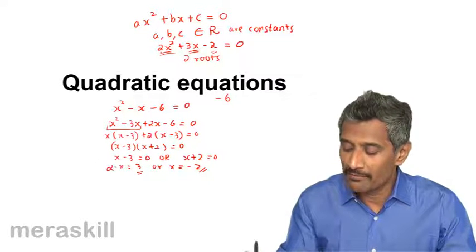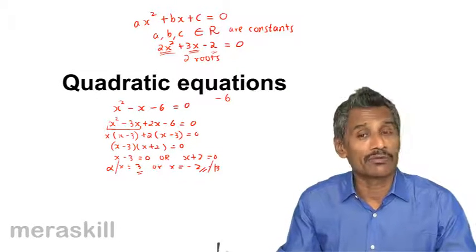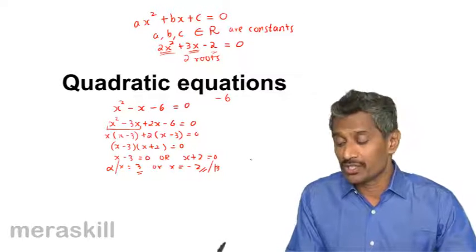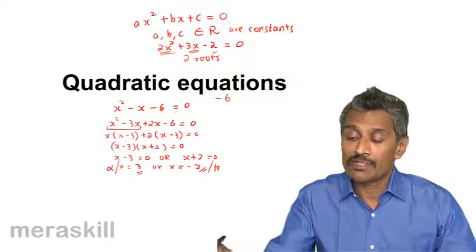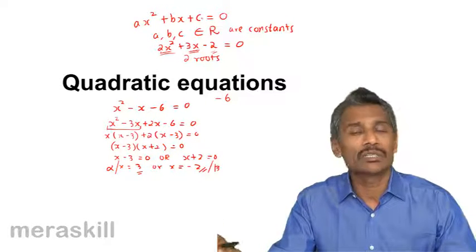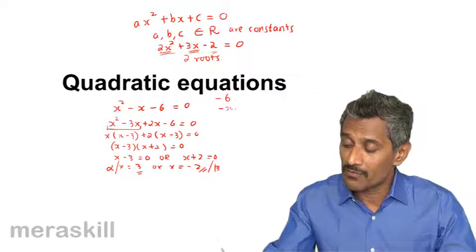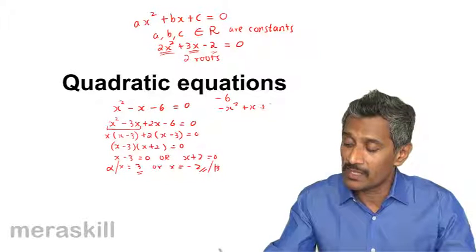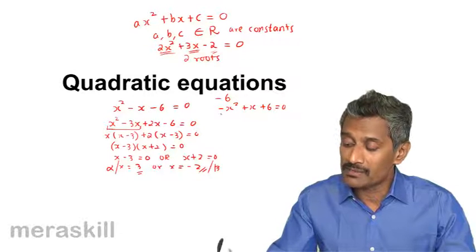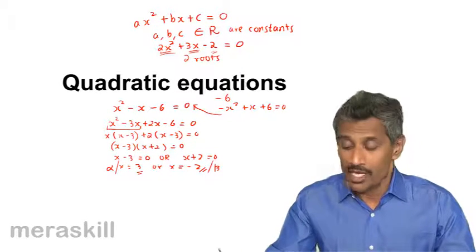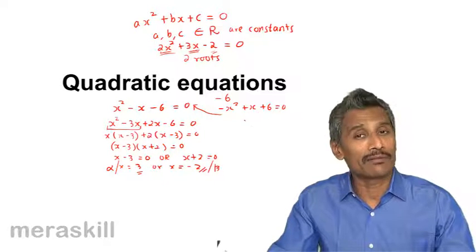In short, these roots are called alpha and beta — alpha is the name of one root and beta is the name of the other. For convenience, we always keep the value of A as 1. For example, if the equation is in the form minus X squared plus X plus 6 equals 0, it would be smarter to multiply all terms by minus 1 to get the standard form. This is how you have a quadratic equation, and all quadratic equations will have two solutions.